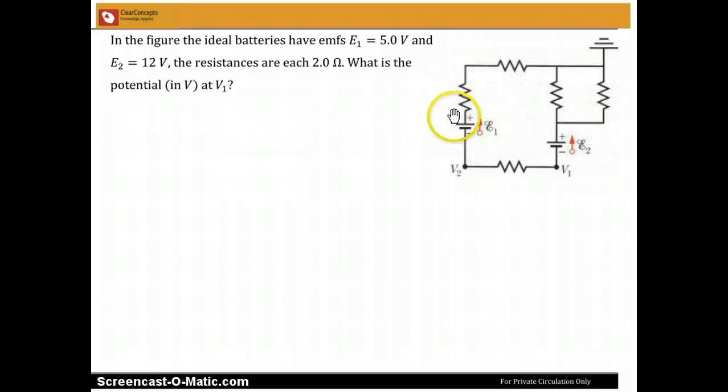For the resistances, there are 5 of them and they are 2.0 ohms each. And the question here is, what is the potential here at V1?